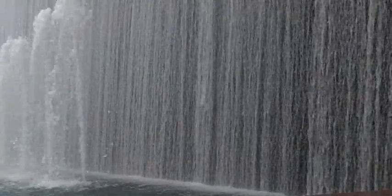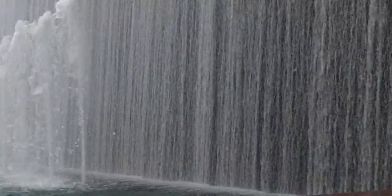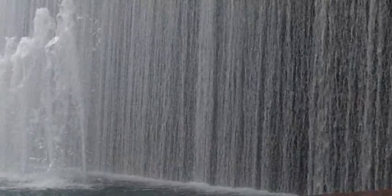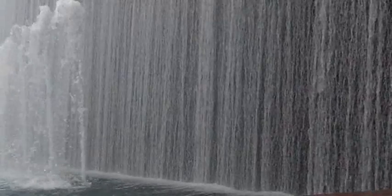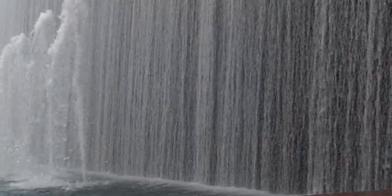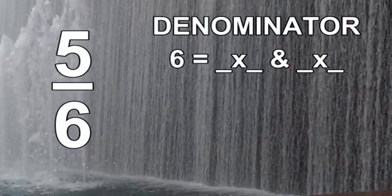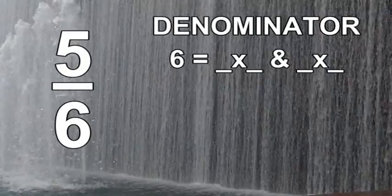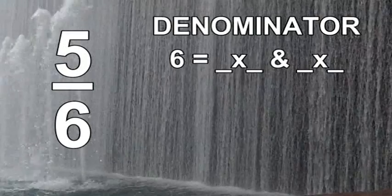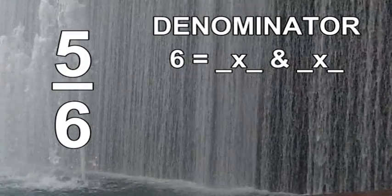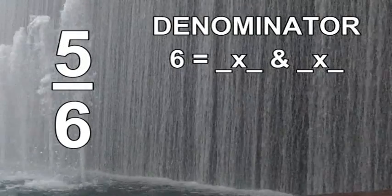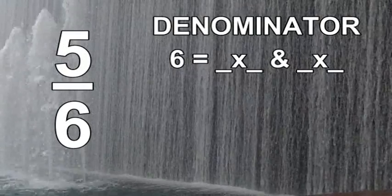Now let's model a fraction that has two possible outcomes. Let's model five over six. Remember, you need to start by writing the factors of six out — there are two possible combinations. You'll have 40 seconds to draw two rectangles and model five over six.